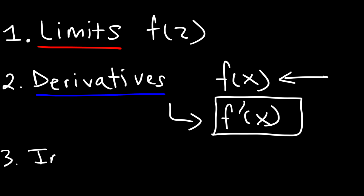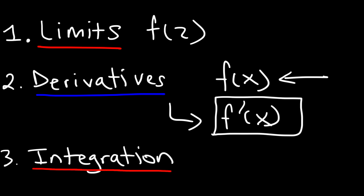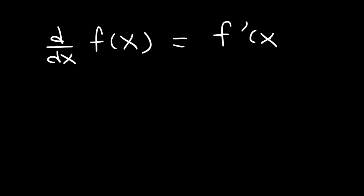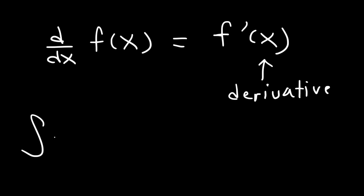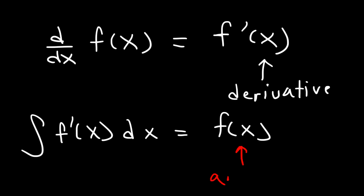The third area is integration. Integration is basically the opposite of derivatives. With integration, you're basically finding the area under the curve. Integration is very useful for calculating how much something accumulates over time. Derivatives and integration are opposites of each other. The derivative of f(x) is f prime of x, and the integral of f prime of x is f(x). So you can think of integration as finding the antiderivative.